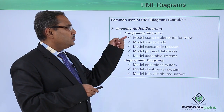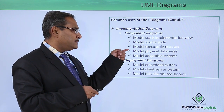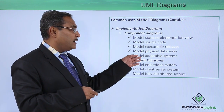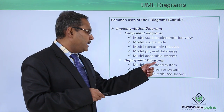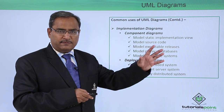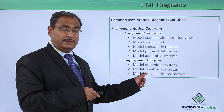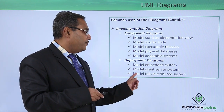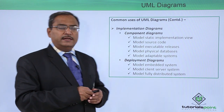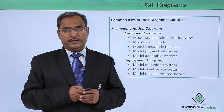Component diagrams are used to model the static implementation view, model source code, model executable releases, model physical databases, and model adaptable systems. Deployment diagrams are used to model embedded systems, model client-server systems — where a server and client machines are connected by a communication network — and model fully distributed systems. In this way, we have discussed the different UML diagrams and their basic purposes and features.